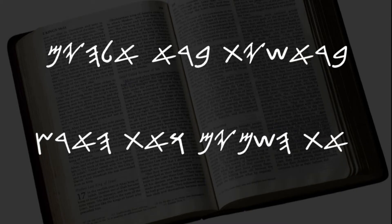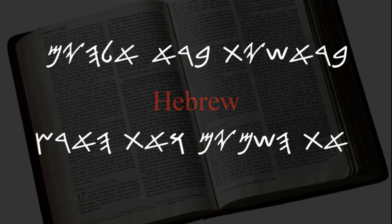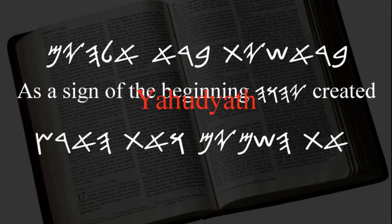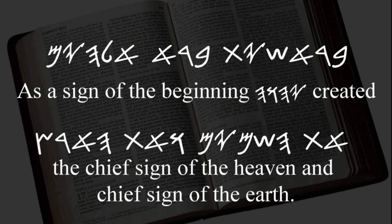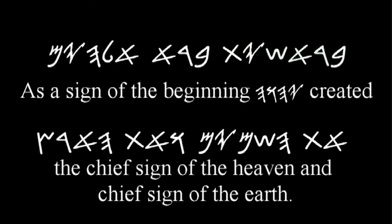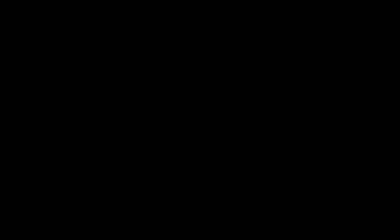So, as I stated before, this is what is called Hebrew, but it's really the word Yahudyeth. We have reinterpreted this, and it states: 'As a sign of the beginning, Yahweh created the chief sign of the heaven and the chief sign of the earth.' And that's the sign of the beginning — Yahweh created the chief sign of the heaven and the chief sign of the earth. Those are the breakdowns, literally word for word.